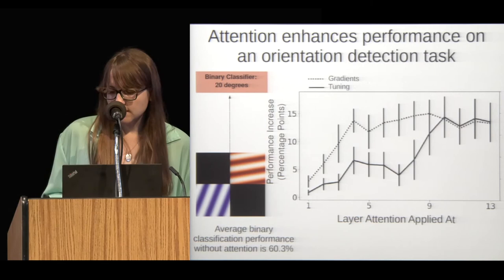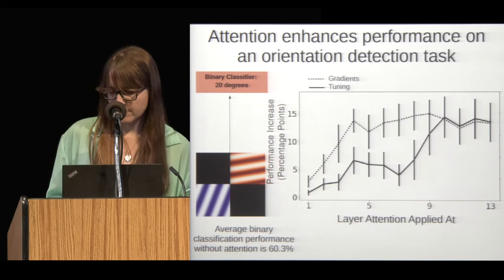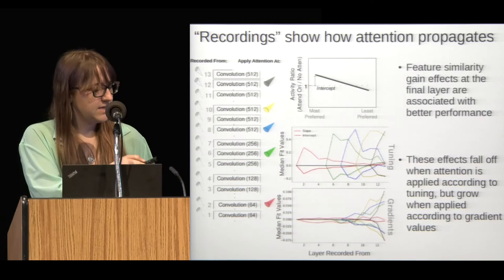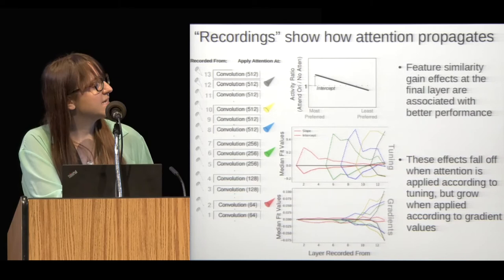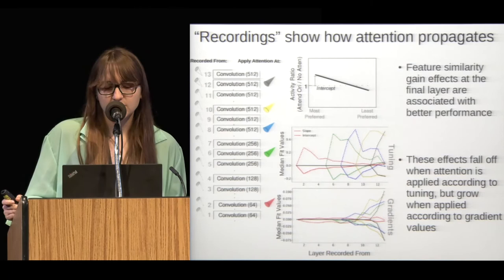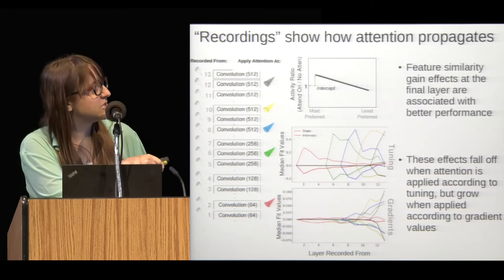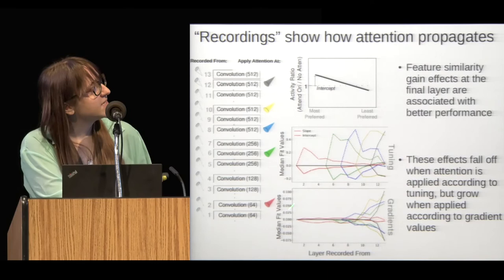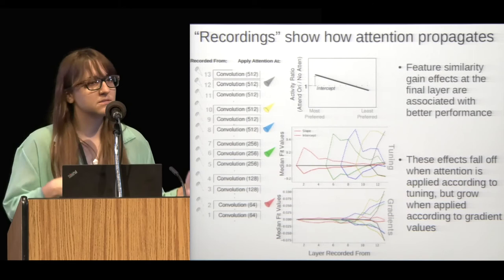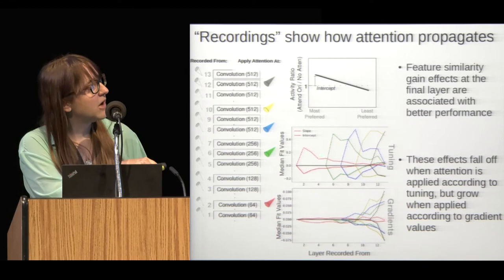To understand why later layers still perform best, we did a recording setup in which all the activity of all layers is recorded while attention is applied to different layers individually. The color coding indicates which layer attention was applied at. These values measure how much the activity resembles the feature similarity gain model of attention — expecting an increase when the most preferred orientation is attended and a decrease when the least preferred is attended, corresponding to an intercept greater than one and a negative slope. At layers where attention is applied, you see this pattern because the attention was designed to mimic the feature similarity gain model. But these effects fall off very quickly, so applying attention early in the network isn't able to impact the classifier later on.